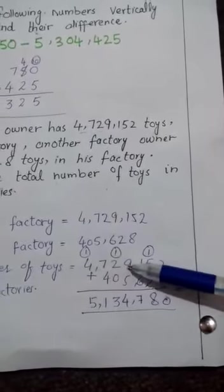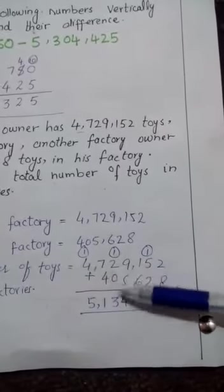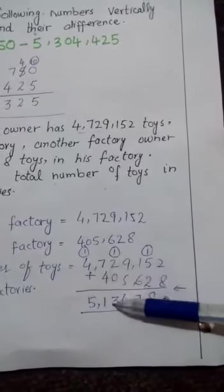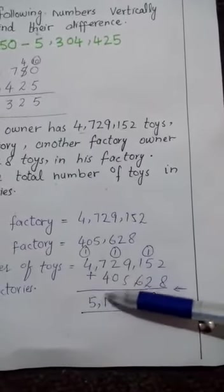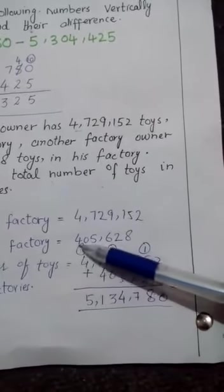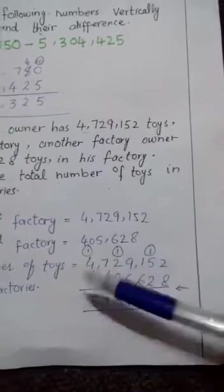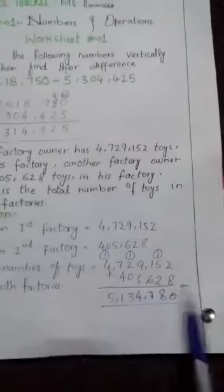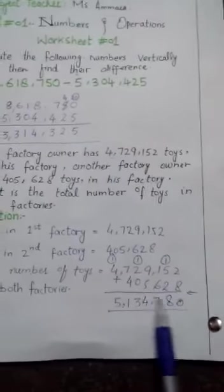value. 4 plus 1 is 5. So this is the total number of toys in both factories.